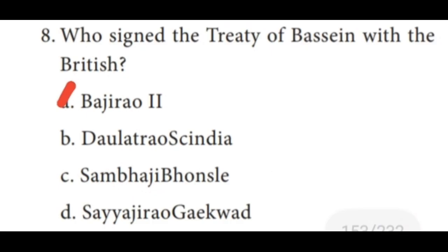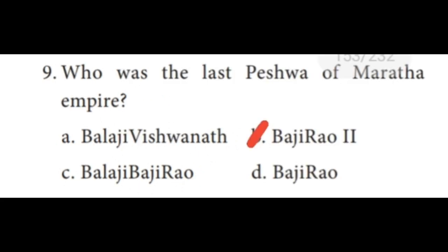Eighth one: who signed the Treaty of Bassein with the British? The correct answer is Bajirao II. Ninth one: who was the last Peshwa of the Maratha Empire? The answer is Bajirao II.